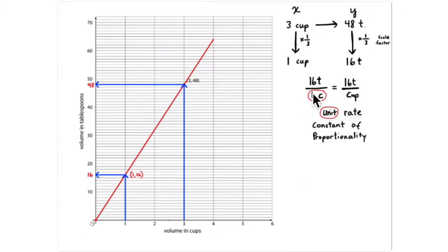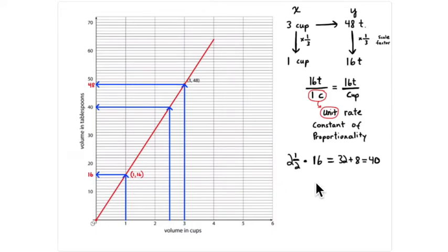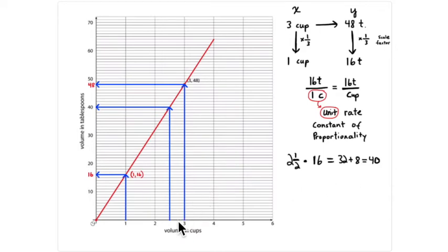The unit rate is sixteen tablespoons per cup — also the constant of proportionality — and it's the value of y when x equals one. For two and a half cups: two times sixteen is thirty-two tablespoons, plus one half of sixteen is eight, so thirty-two plus eight equals forty tablespoons. You can check this on the graph, which is one of the useful things about having both a graph and an equation at the same time.